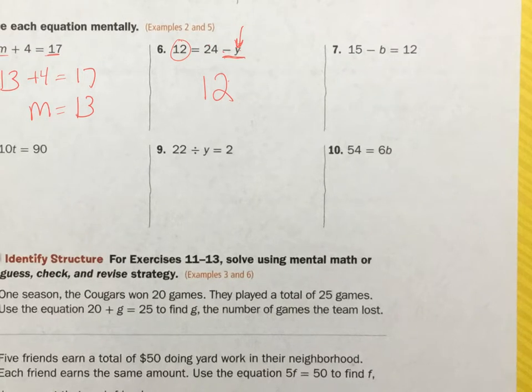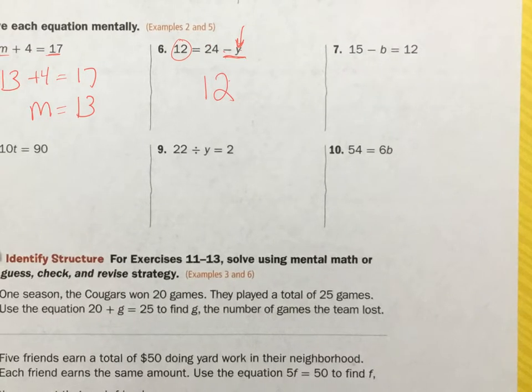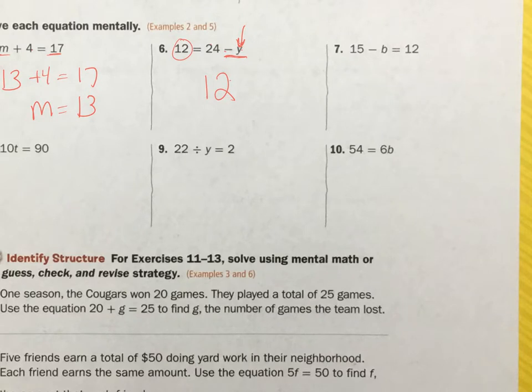15 minus b equals 12. Well, if I'm starting at 15, getting rid of something, and ending with 12, I'm going to say b equals 3. So I'll put 3 in here. 15 minus 3 is 12. 3 is my answer.